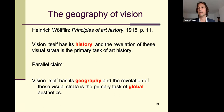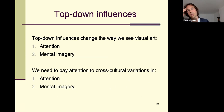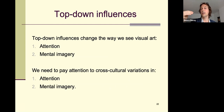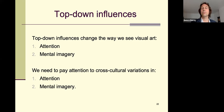I want to highlight two important determinants of why top-down influences matter in the aesthetic domain. The general argument is that top-down influences change how we see an artwork — and this applies beyond visual art. The two determinants are attention and mental imagery: top-down influences change our attention and mental imagery, which changes our experience.